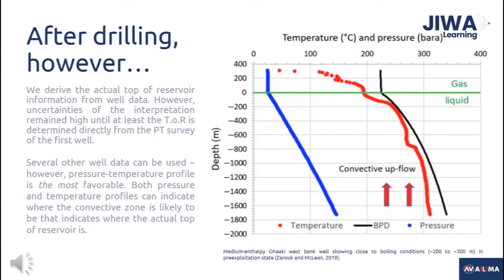In geothermal drilling, the actual Top of Reservoir information from subsurface inference could be confirmed from several well data, preferably the pressure-temperature profile. Determining the Top of Reservoir specifically during exploration drilling is done to assist in setting production casing depth. The pressure-temperature profile is the most favorable well data to confirm the actual Top of Reservoir of a geothermal reservoir.